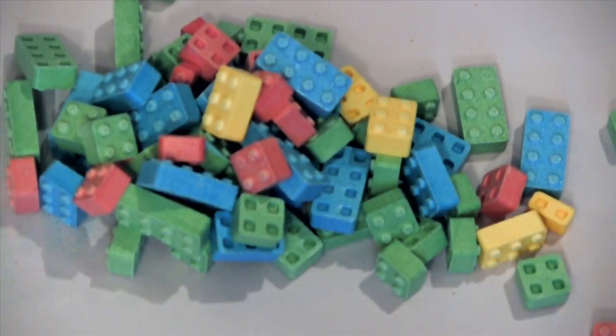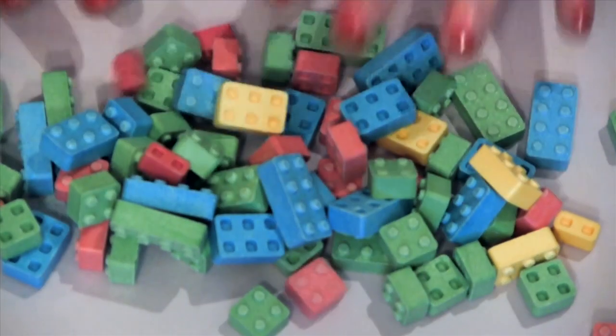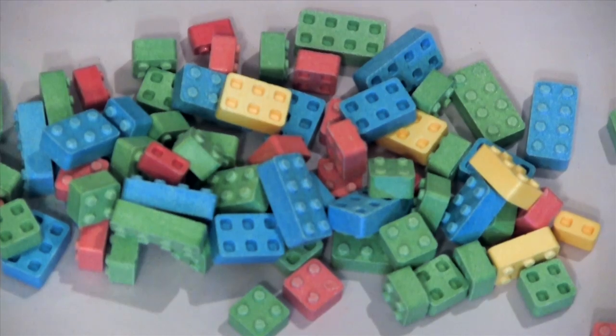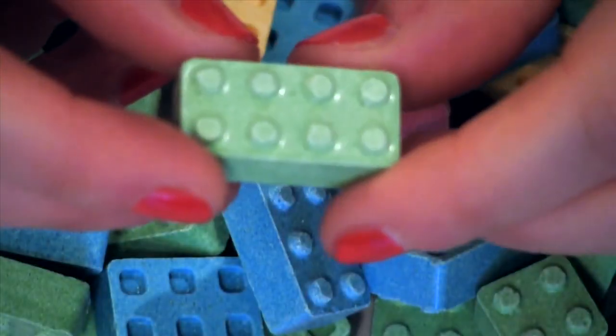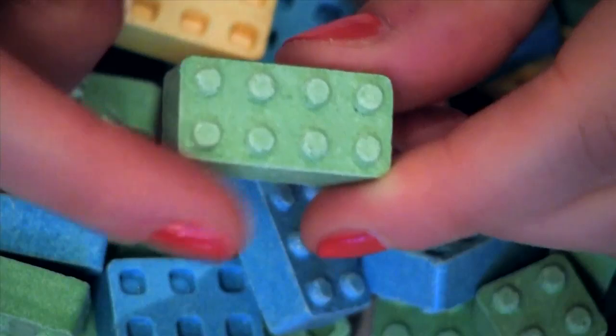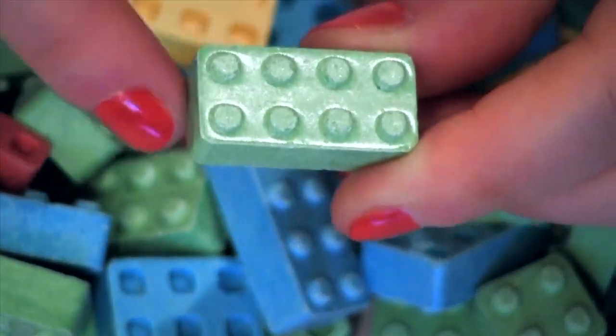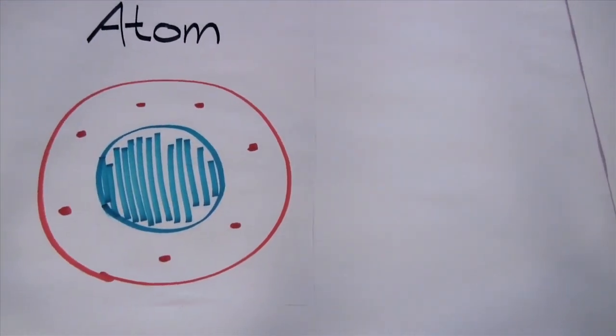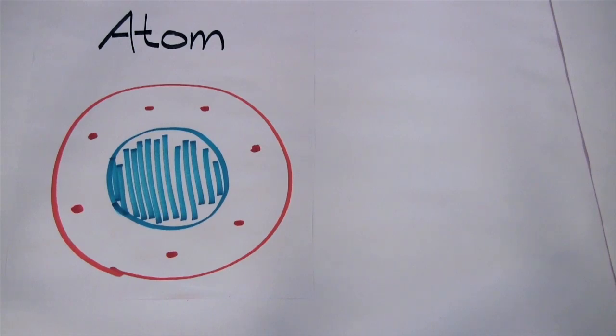An atom is really, really, really small, so you can't see it with your naked eye. But to help us understand, I've brought these blocks. What do you see? A bunch of blocks. Are they all the same? Yes, each block has the same parts. Right — each block is made up of a base and some number of bumps, and this is true of every block. In the same way, an atom is made up of a very specific set of pieces.